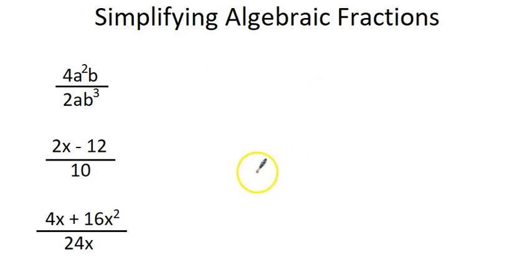So this first one, this first one is we can just cancel the numbers. 4 divided by 2 just gives us 2 on top. We don't need to put 2 over 1. I mean, you could if you wanted to, but it'd be a bit crazy.